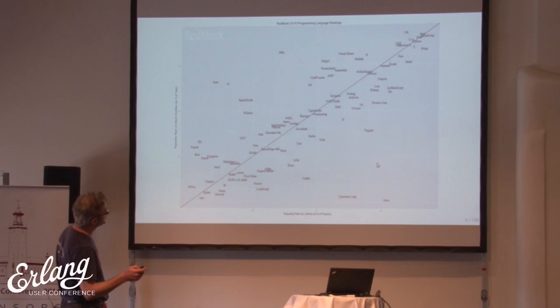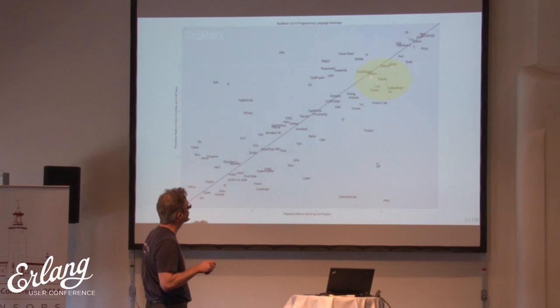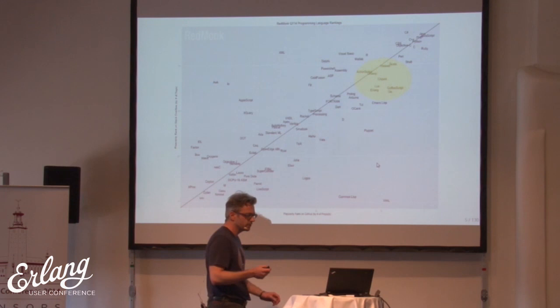Let me point out where Erlang is. There are a few neighborhoods. There's a super popular group up here with Java, JavaScript, PHP, C Sharp, Ruby, C++. Then there's another neighborhood with Scala, Haskell, Clojure, Lua, Erlang, CoffeeScript, Go, ActionScript, Ruby. Erlang is not in the top tier.